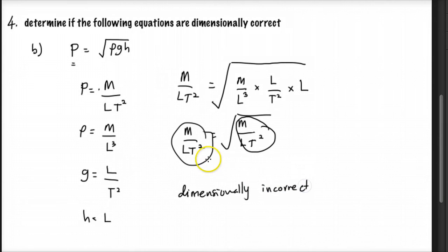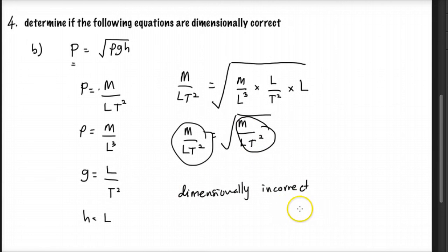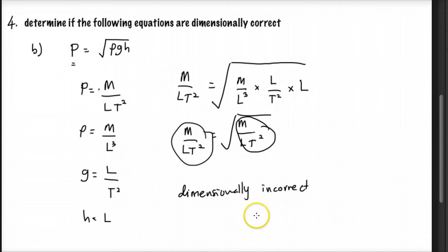The left side is not the same as the right side, so the equation is dimensionally incorrect. That's question 4b — we move to the next question.